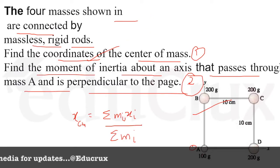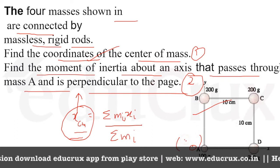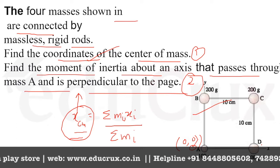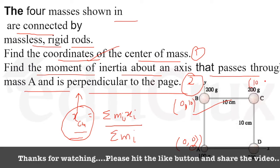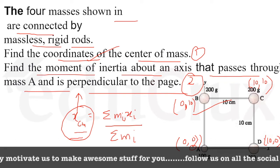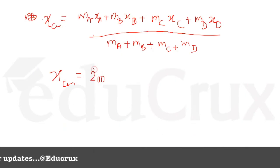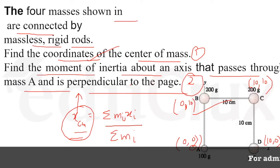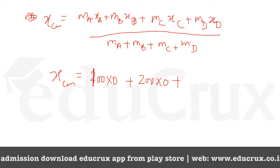When we expand the summation, it becomes: (m_a * x_a + m_b * x_b + m_c * x_c + m_d * x_d) divided by (m_a + m_b + m_c + m_d). Since mass A is at the reference point, x_a = 0. The coordinates are: A at (0, 0), B at (0, 10), C at (10, 10), and D at (10, 0) in centimeters.